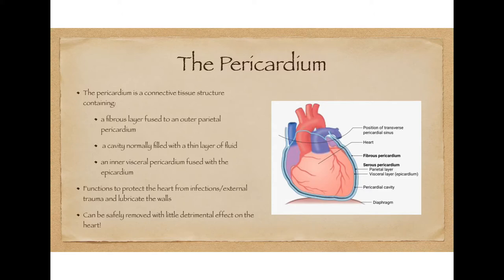Here's a diagram showing the different components of the pericardium. Here is the very fibrous outer layer, fused with the serous component of the pericardium, which has a parietal layer and an inner visceral layer. Between those two layers is a thin layer of fluid called the pericardial fluid, and the visceral layer is essentially inseparable from the pericardium.